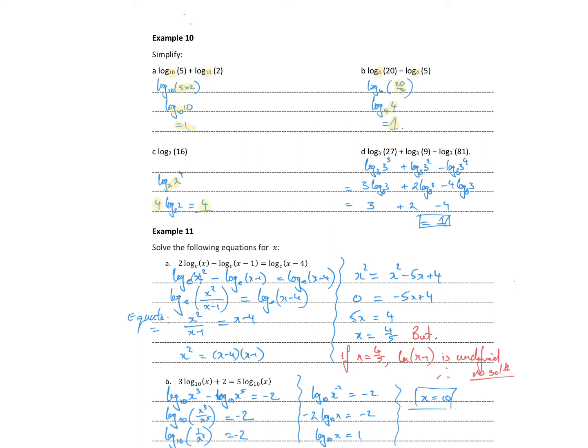They're all log base 3, so I could just do 27 times 9 and then divide by 81 because it's a subtraction. Or if I simplify each term separately: 27 is 3 to the power of 3, 9 is 3 to the power of 2, and 81 is 3 to the power of 4. Each of those powers come out the front and we end up with log base 3 of 3 being 1, so we end up with 1 as our answer.